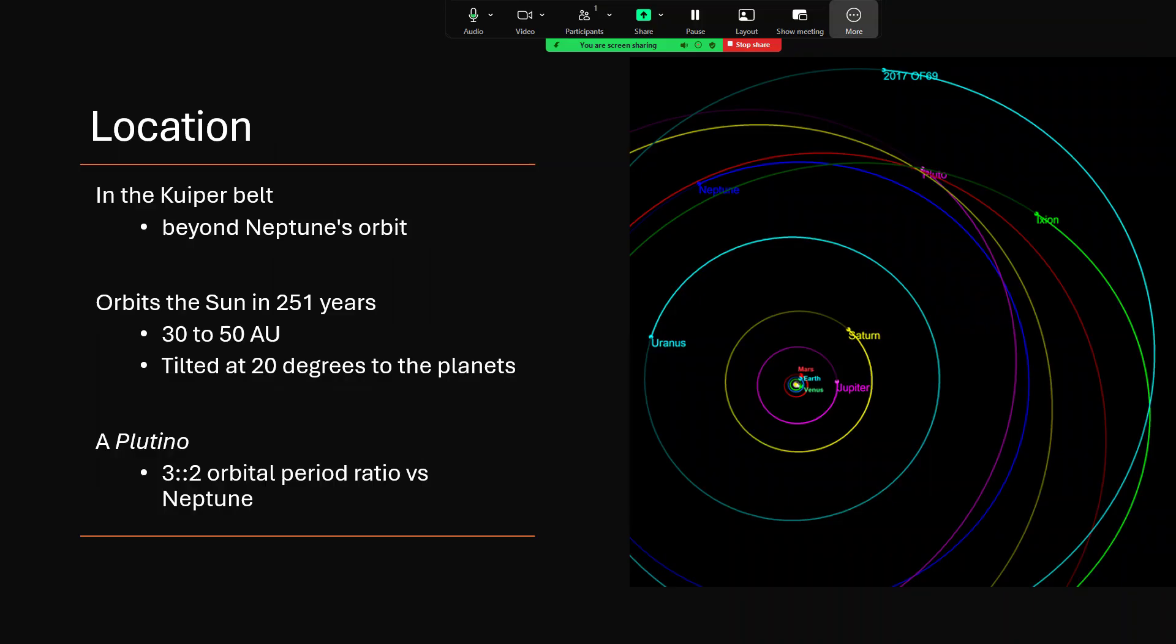It's marked in green in terms of its orbital path here, taking 251 years going around the sun from a close approach, a perihelion of 30 astronomical units out to 50 AU. So actually 30 AU is the distance of Neptune, so you can see that its orbit actually comes within the blue line where Neptune goes. And that is something that Pluto also does. And it is indeed a Plutino.